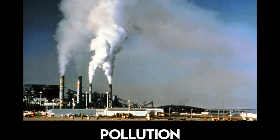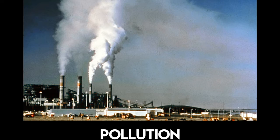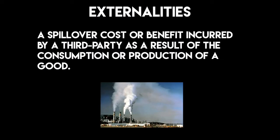I'm going to step back from merit goods and demerit goods and talk about pollution as an externality. An externality is a benefit or a cost to a third party who is not involved in a transaction. For example, a company is producing goods or energy or something, and that pollution is not being consumed by somebody who is affected by it — so that's an externality. It's that spillover cost or benefit incurred by a third party — somebody who is not involved in the transaction as a result of the consumption or production of a good.